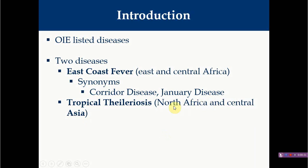East Coast Fever is also known as corridor disease or January disease. Even though these are synonyms, the severity of corridor disease or January disease is more than classical East Coast Fever. In corridor disease, buffalo are generally responsible for transmission of infection to cattle. In January disease, the disease is seen between January to March in Central Africa due to the season, and it is more severe than classic East Coast Fever, generally inducing death within four days.